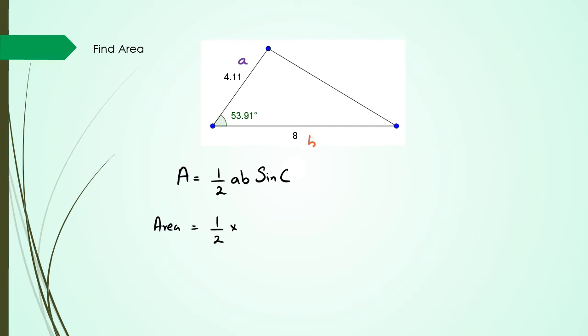So I'm going to put that as A, that as B, and this as angle C. So half times 4.11 times B, which happens to be 8, times sine of 53.91 degrees. So in this case, the area is equal to 13.29 units squared.